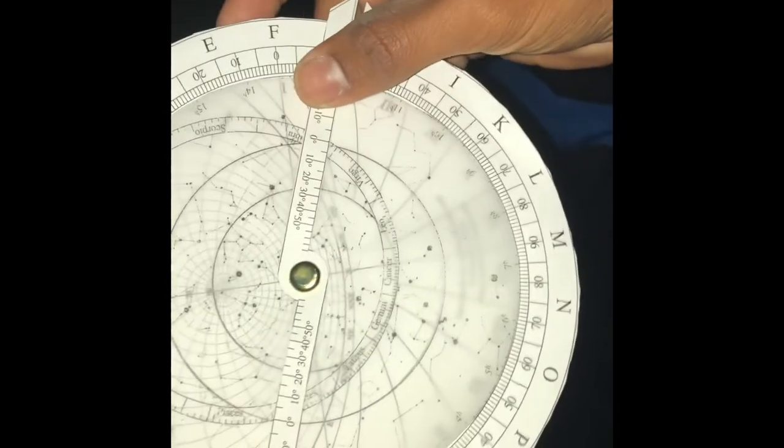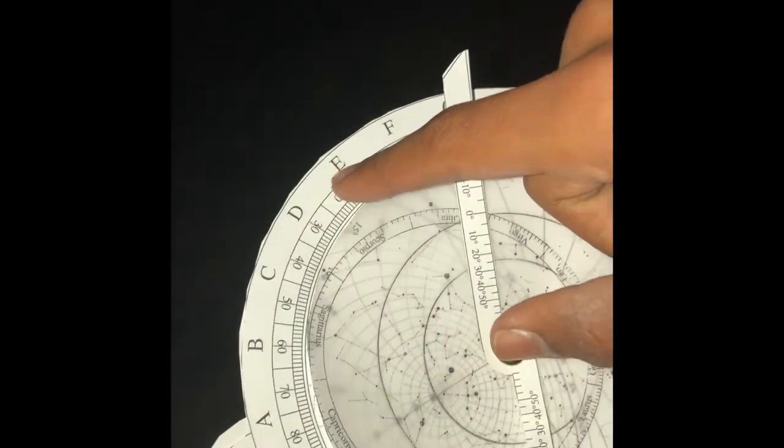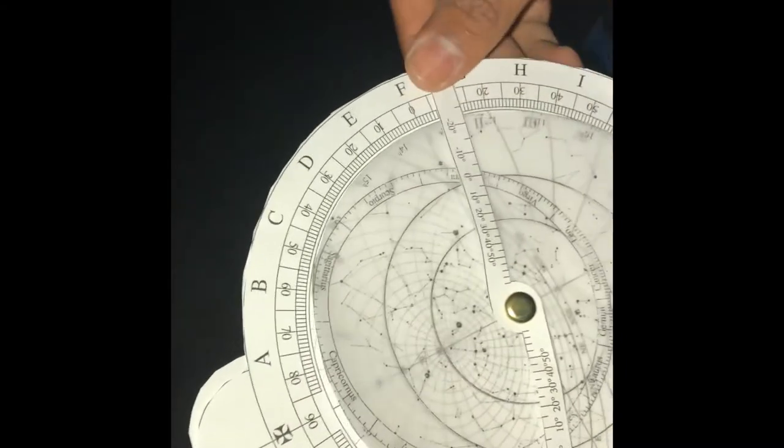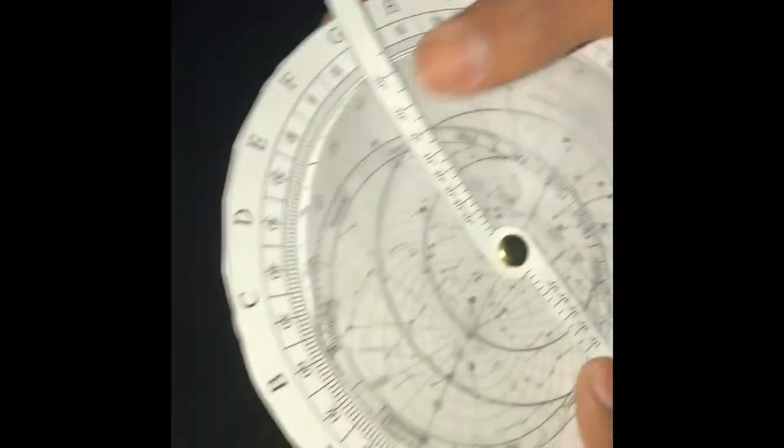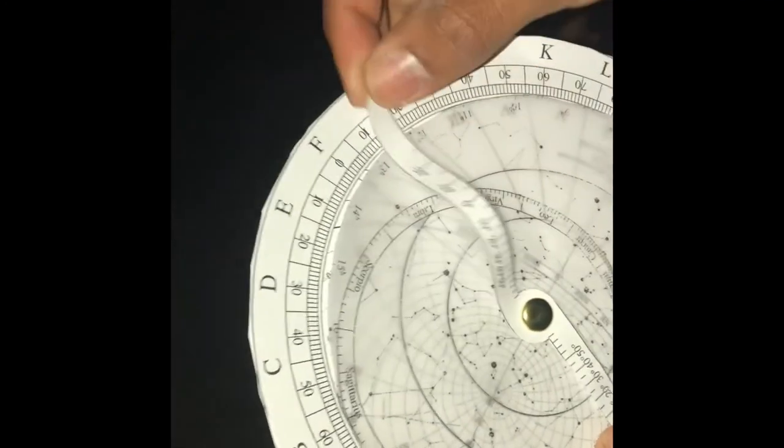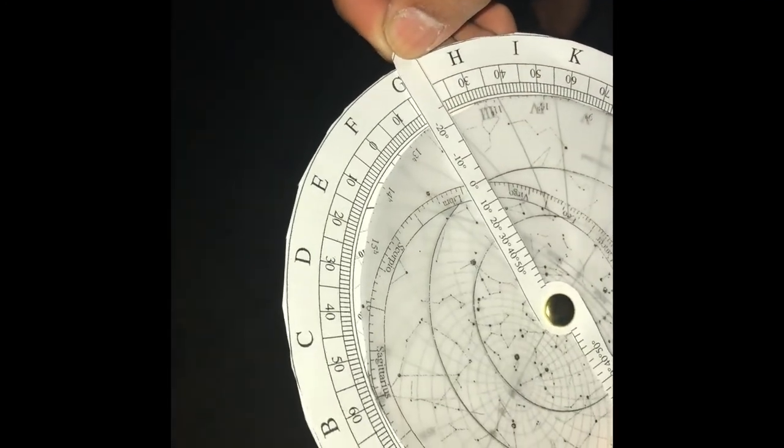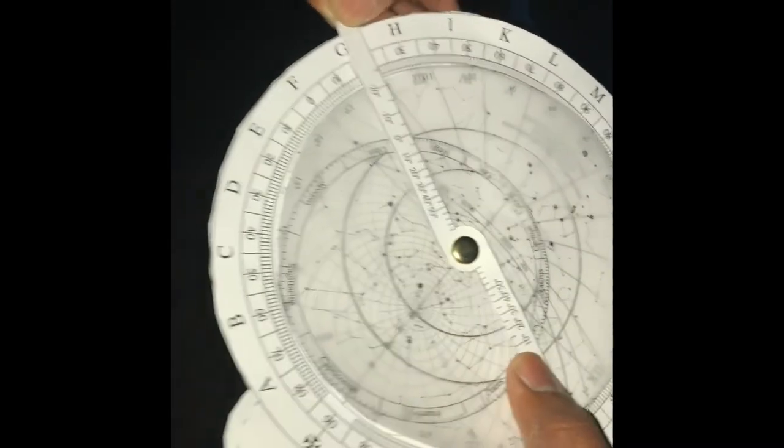So then if we look at that now, we see 1, 2, 3, 4, 5, 6, 7. So if we put it right at 20 degrees, we're going to see that sunrise should be a little after 7. And that's when sunrise should be.